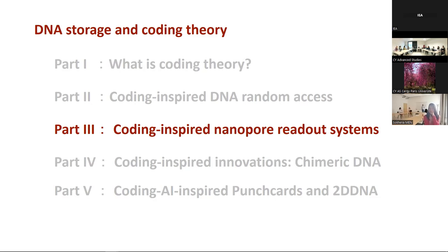At that time the nanopore error rate was horrible — 20 to 25% — and they had insertions and deletion errors, symbols that were missing or inserted. If you're a coding theorist, you dread those errors. These are not ordinary substitution errors. At that time people did not really know how to efficiently do error correction of indels — insertions and deletions. We were told: don't touch nanopores. But we said, let's try it out.